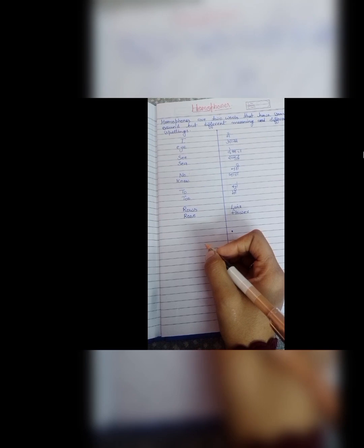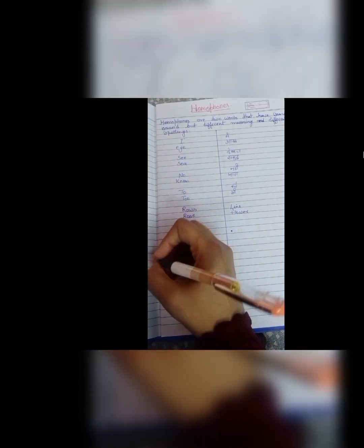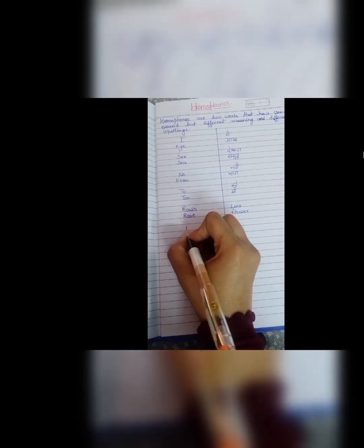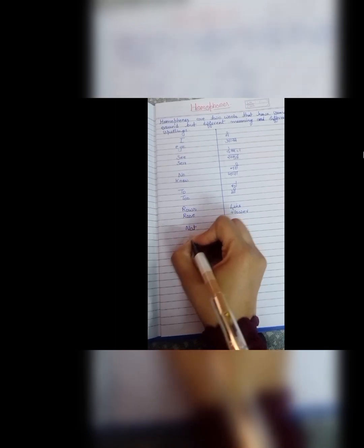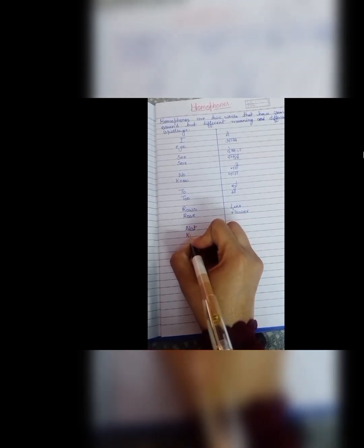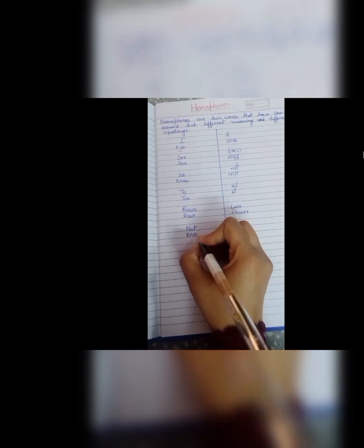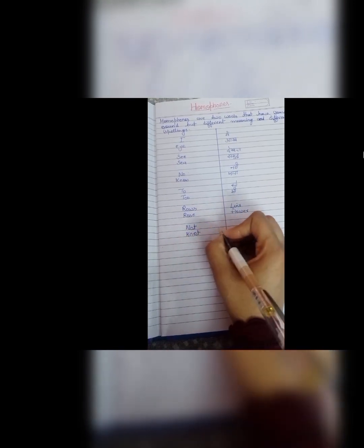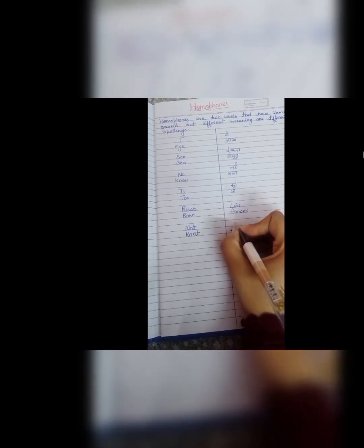Next one is rows and rose. R, O, W, S, rows means lines. Jaisi line joh queue hoti hai, woh rows wali. School me joh rows laggi hoti hai. And next one is R, O, S, E, rose. This is a flower, rose flower.